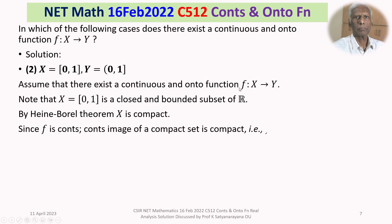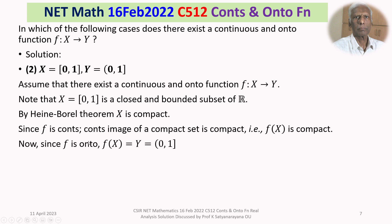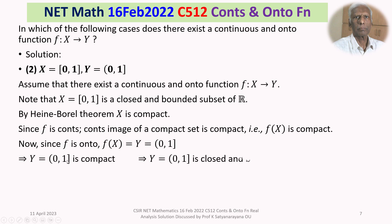Since f is a continuous function from X to Y and X is compact, by the result that the continuous image of a compact set is compact, f(X) is compact. But f is onto by our assumption, therefore f(X) is the whole of Y, that is (0,1]. That means Y is compact, which by Heine-Borel means the semi-closed interval (0,1] is closed and bounded. This is a contradiction.